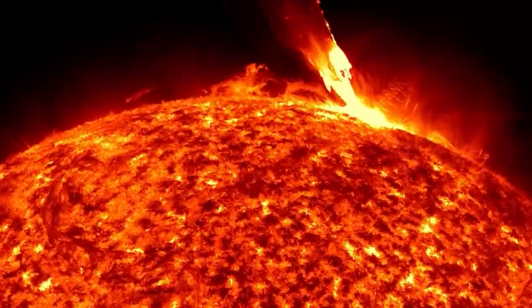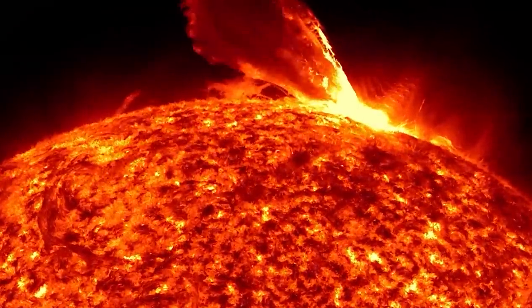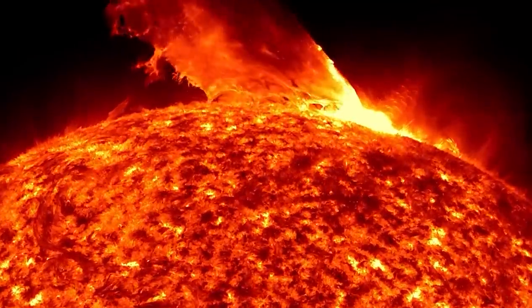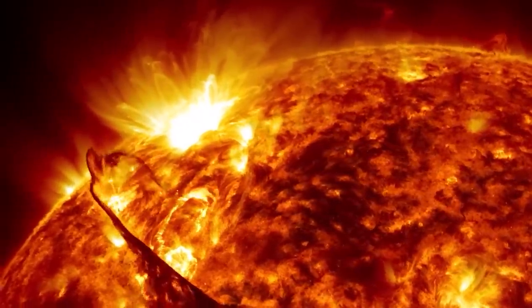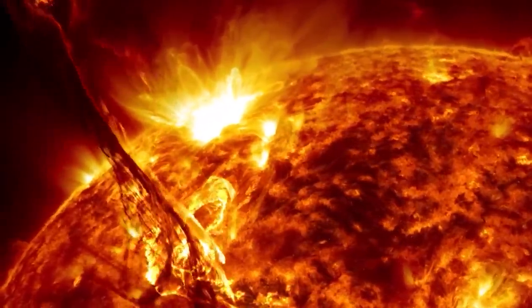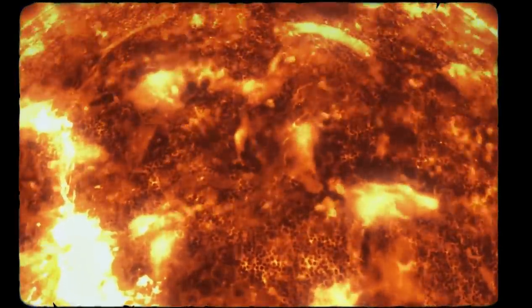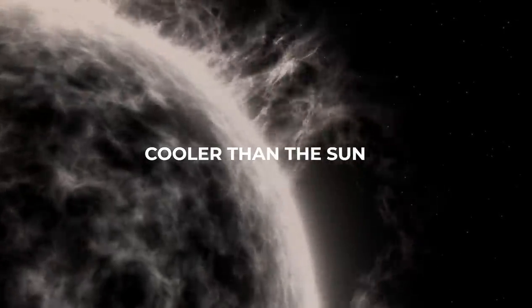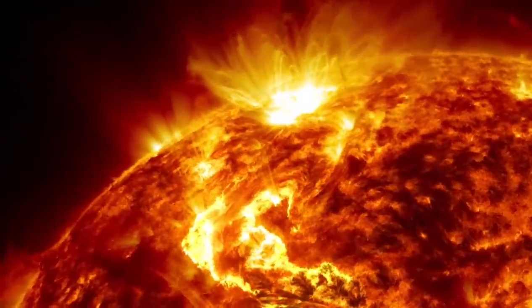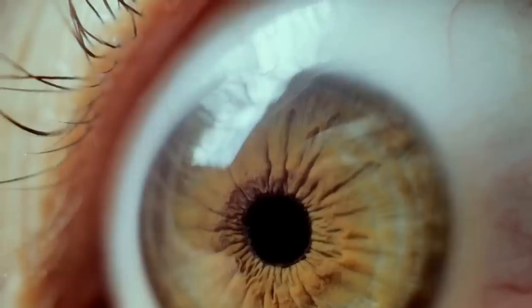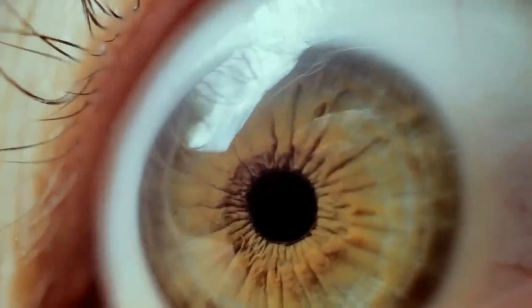Betelgeuse is 16.5 times as massive as the Sun. The supergiant has 126,000 solar luminosities and is visible from 548 light-years away. This star has a surface temperature of 3,600 Kelvin, making it cooler than the Sun. Only about 13% of Betelgeuse's radiant energy is visible light. If human eyes could see light at all wavelengths, Betelgeuse would overtake Sirius as the brightest star in our night sky.